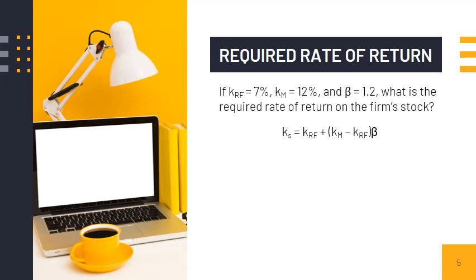k sub s stands for required rate of return. k sub rf stands for risk-free rate of return, which pertains to the rate on short-term treasury bills. k sub m stands for the return on the overall stock market. Beta refers to the stock's non-diversifiable or systematic or market risk. When risk-free rate is not given in the problem, it can be computed as the sum of real rate of return and inflation premium. The difference between the return on the market and risk-free rate pertains to the market risk premium. Following the CAPM formula, our required rate of return is 13%.